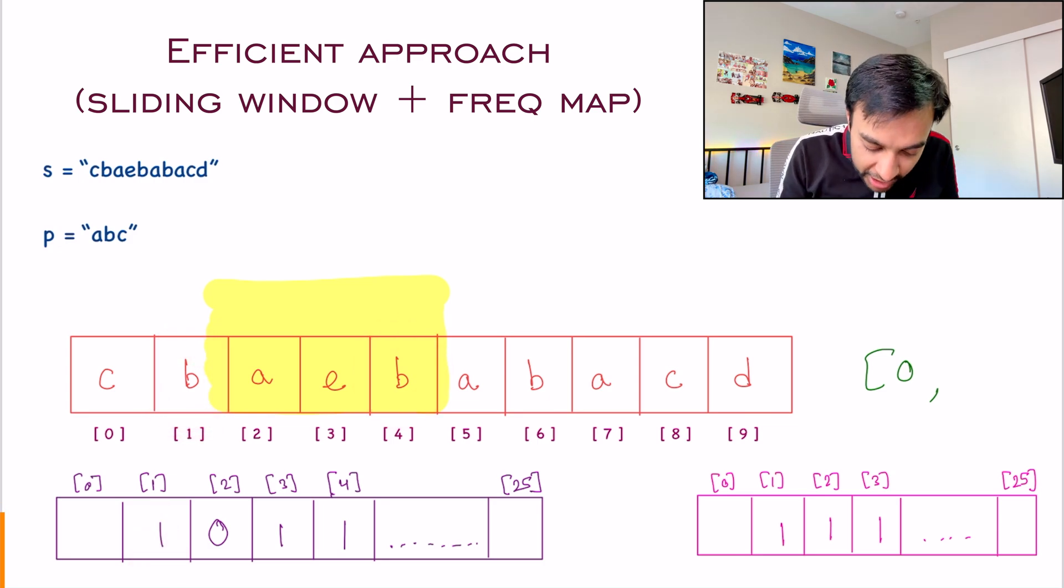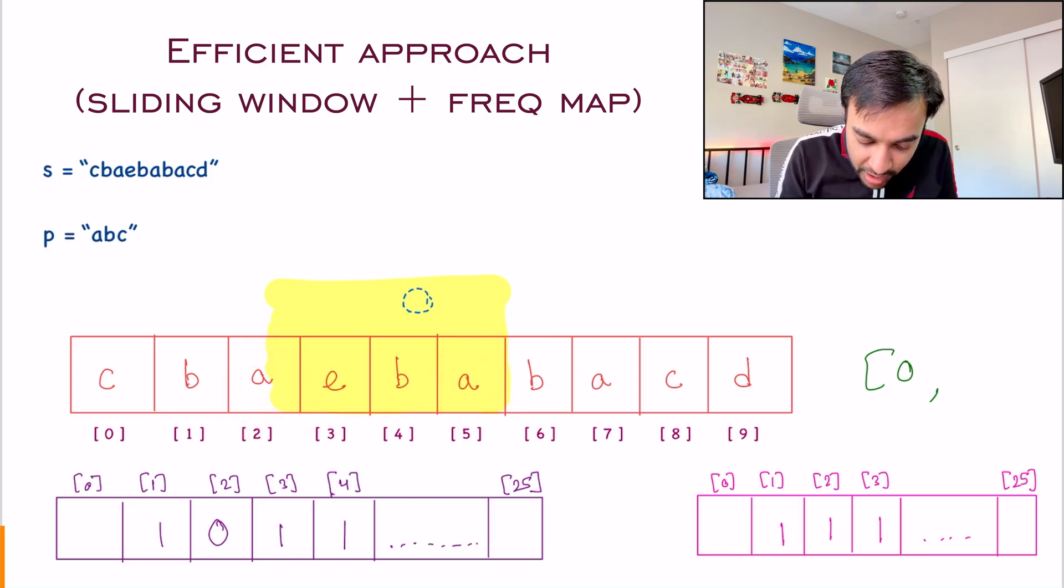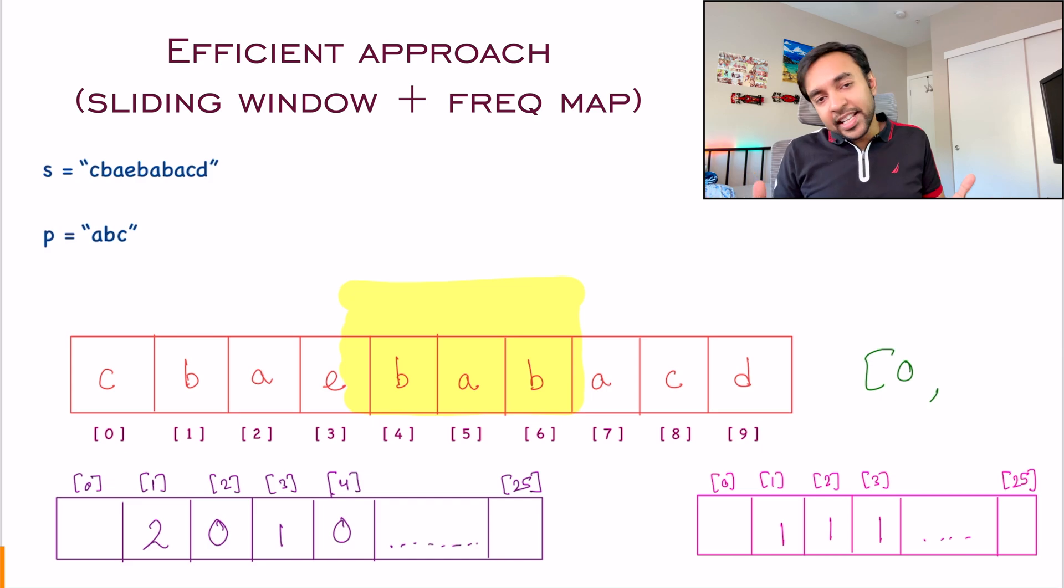This way, you will keep on moving ahead. Once again, A gets added and A gets removed. So net change is nothing. You move ahead. What do you have this time? B gets added. So this becomes a two. And then E gets removed. So this will become a zero. You get the idea, right?